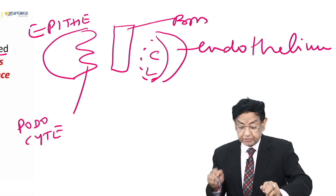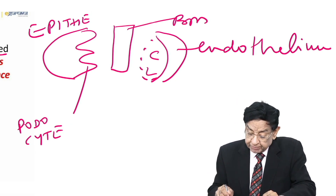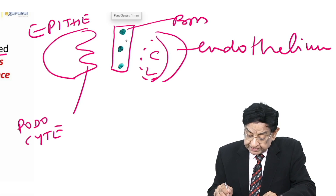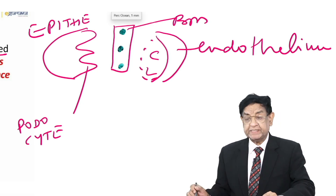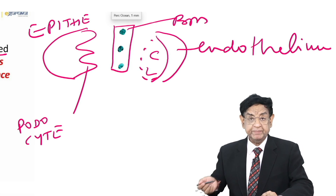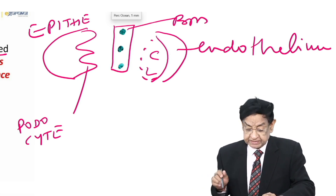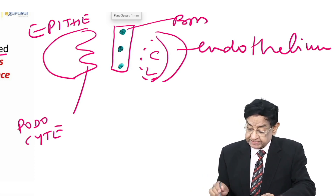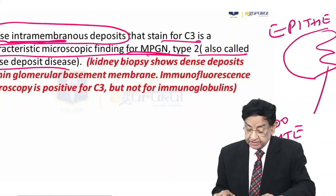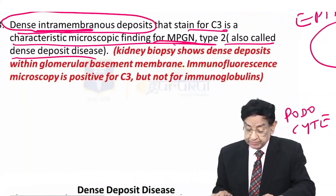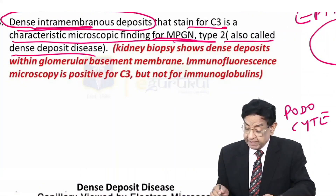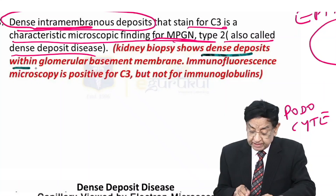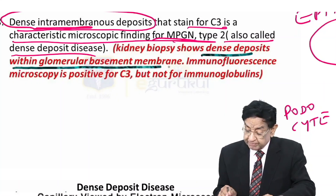In dense deposit disease, there is deposition of complement in the basement membrane, and that's why we call it dense deposit disease. Kidney biopsy shows dense deposit within the glomerulus basement membrane.